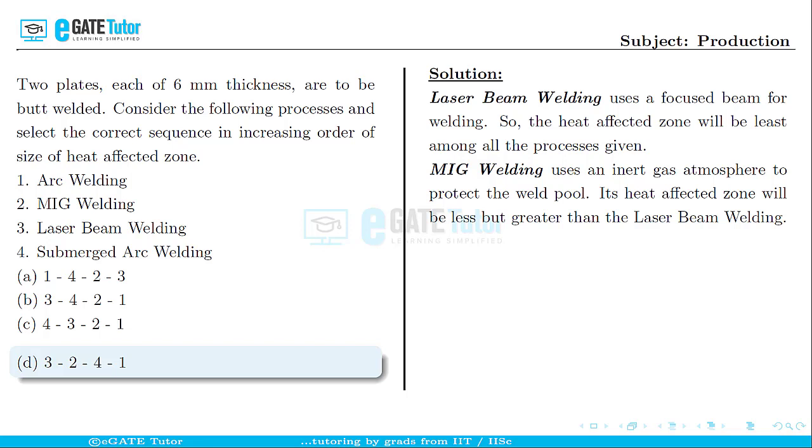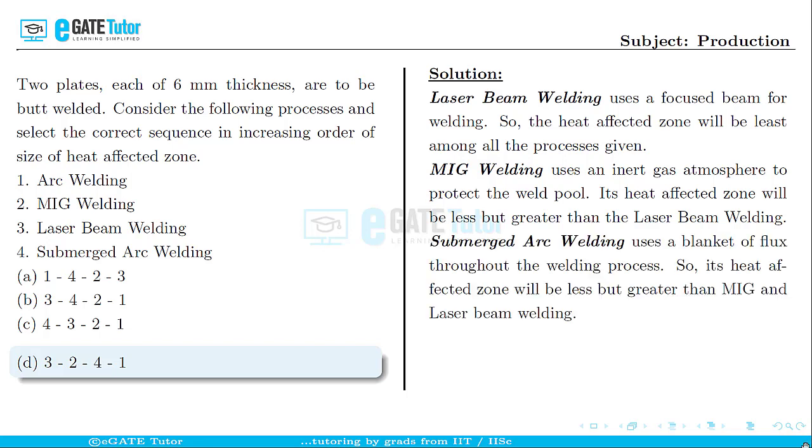The next process which comes in the order is submerged arc welding. This submerged arc welding process generally uses a blanket of flux. Throughout the welding process, the welding takes place under the blanket of flux. So the heat affected zone will be also less in this process but it will be greater than MIG welding as well as laser beam welding.